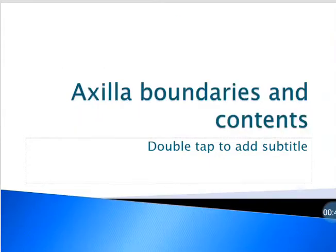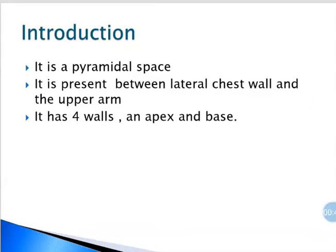First we'll start with boundaries and contents of axilla. It is a pyramidal space present between the lateral chest wall and the upper portion of the arm. It has four walls, an apex and a base.